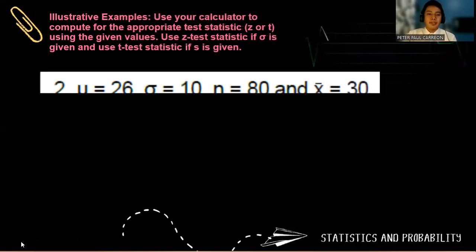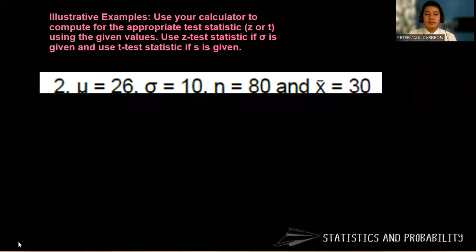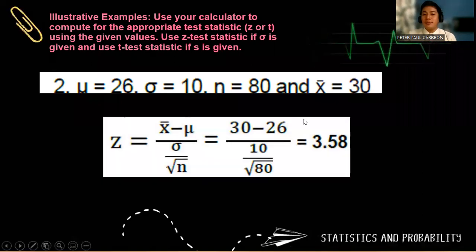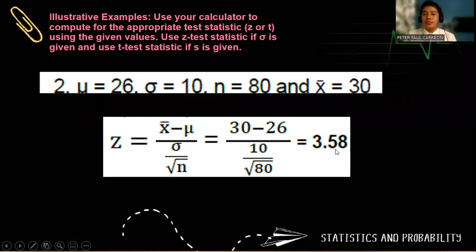Next example. Mu is 26, sigma is 10, N is 80, and our sample mean is 30. Obviously, sigma is 10, sigma is known. Therefore, we use a Z test. Substituting the values, we have 30 minus 26 over 10 over the square root of 10. Putting this in your scientific calculators would give us a value 3.58. This is our test statistic or the computed test statistic.